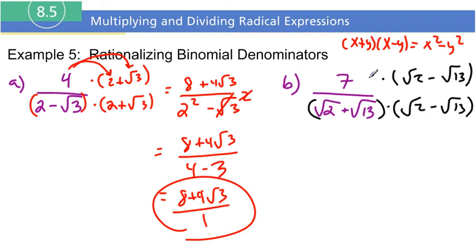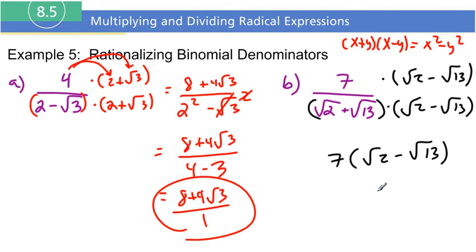For the top, I'm actually not going to multiply the 7 through — I'm just going to leave it as 7 times the quantity radical 2 minus radical 13. For the denominator, since we're multiplying conjugates, we just square the first term and square the second term with a minus sign. If I square radical 2, that's just 2. If I square radical 13, that's just 13.